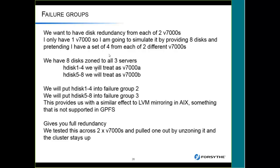I took hdisk 1 through 4 and treated them as failure group A, and 5 through 8 as failure group B, assigning them to different failure groups. This lets me do the equivalent of LVM mirroring, which GPFS does not support. If I lose hdisk 1 through 4, the GPFS cluster stays up because it's mirrored over to 5 through 8. We actually did some testing with two V7000s — we unzoned one and the cluster stayed up, confirming full redundancy works.